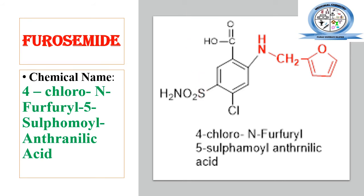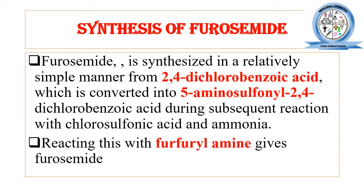As far as the synthesis of furosemide is concerned, it can be synthesized in a straightforward manner from 2,4-dichlorobenzoic acid, which is used as the starting material. This 2,4-dichlorobenzoic acid is treated or reacted with chlorosulfonic acid and ammonia. These two reagents can be used simultaneously in a single step.